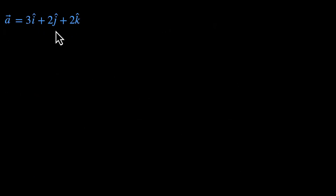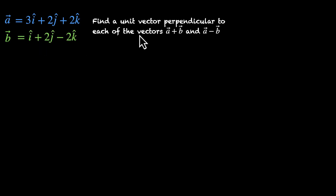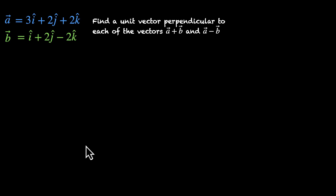Let's solve one more. Vector a is 3i-cap plus 2j-cap plus 2k-cap, vector b is i-cap plus 2j-cap minus 2k-cap, and we need to find a unit vector perpendicular to each of the vectors a plus b and a minus b. Pause the video and try this out.